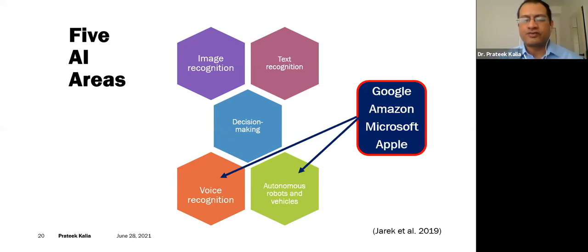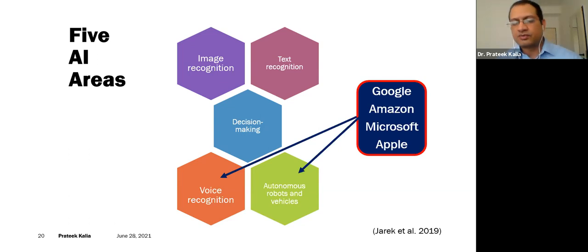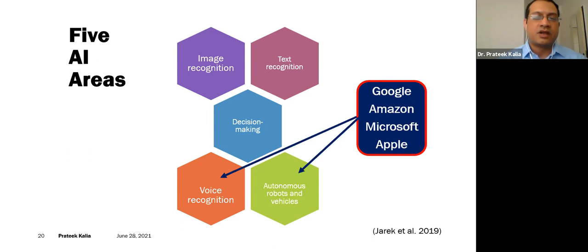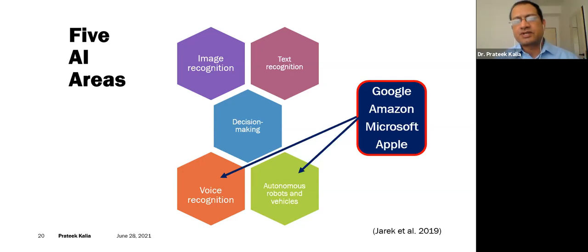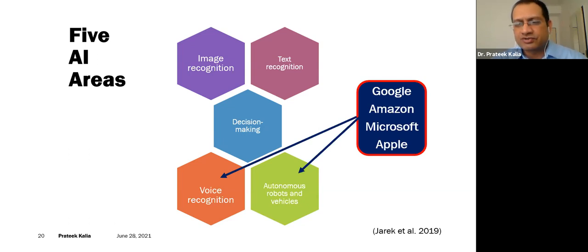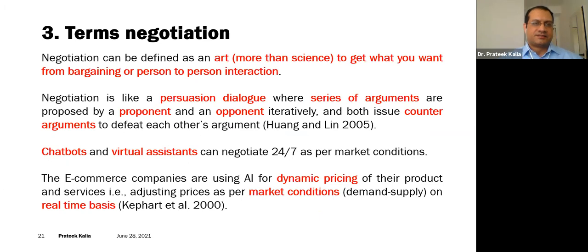I am also giving hints and areas for students, researchers, and faculty members to explore for articles or projects — upcoming areas in artificial intelligence and e-commerce. Image recognition and text recognition are becoming somewhat established, but major companies like Google, Amazon, Microsoft, and Apple are working on new areas like voice recognition, autonomous robots, and vehicle systems.